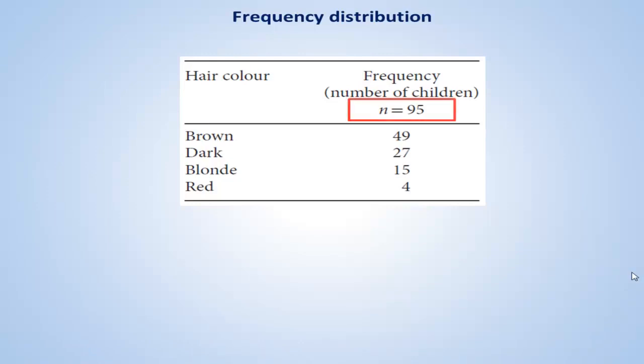Note that the total frequency, n equals 95, is shown at the top of the frequency column. You should always do this; it is helpful to any reader. Taken as a whole, this table tells us how the hair color of each of the 95 children is distributed across the four color categories. In other words, this table describes the frequency distribution of the hair color data.